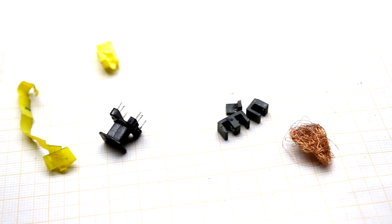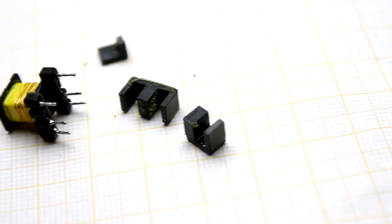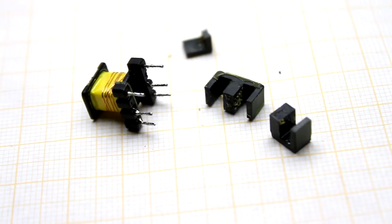The number of turns of the windings was borrowed from the transformer for charging cell phones. The circuit is almost the same, the number of windings too.